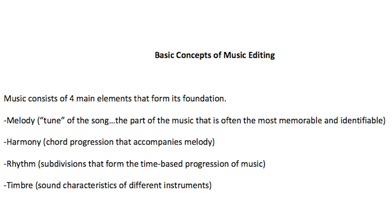Music consists of four main elements: melody, harmony, rhythm, and timbre. The melody can be thought of as the tune of the song, while harmony is the chord progression or harmonic progression that accompanies that melody or tune. The rhythm is the subdivisions that form the time-based progression of music, and timbre refers to the characteristics of sounds of different instruments that make up the music.